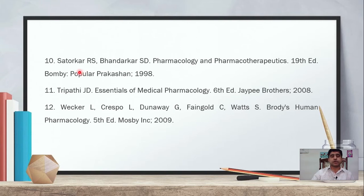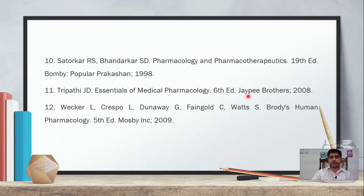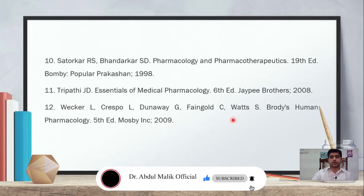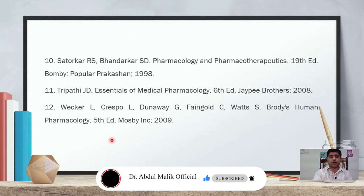Satorkar RS — Pharmacology and Pharmacotherapeutics, 19th edition, Bombay Popular Prakashan, 1998 — an Indian author. Tripathi — Essentials of Medical Pharmacology, very commonly studied across pharmacy and medical disciplines, 6th edition, JP Brothers, 2008; newer editions are available. Victor L — BroadBase Human Pharmacology, 5th edition, Mosby, 2009 — also important. HEC has recommended all these books for studying pharmacology.